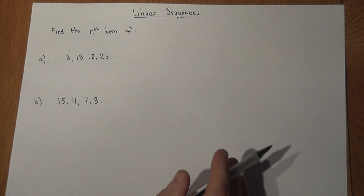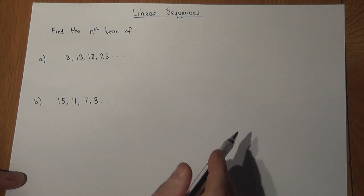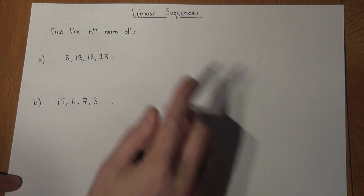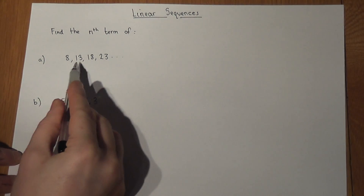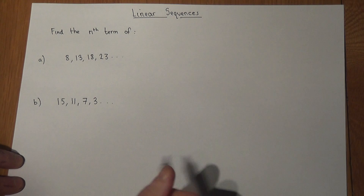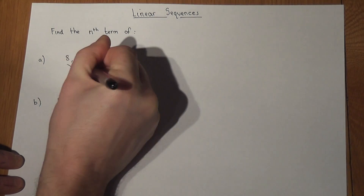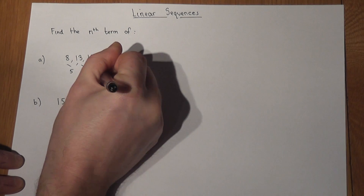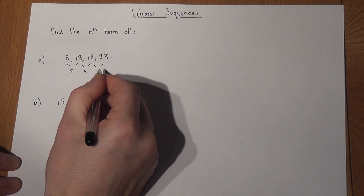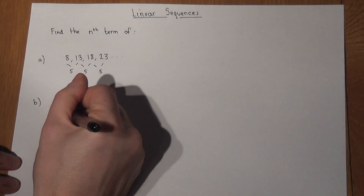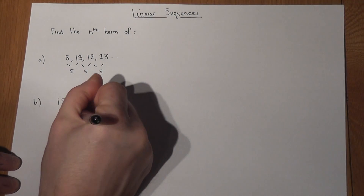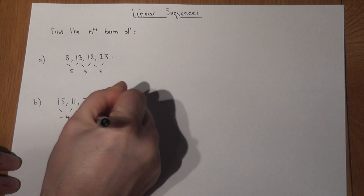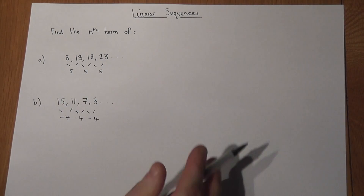This video is a snappy review of finding the nth term of linear sequences. These are called linear sequences because they go up by a fixed amount — in the first sequence it goes up by five. The second one goes down by four: minus four, minus four, minus four. This constant difference shows us they are linear sequences.